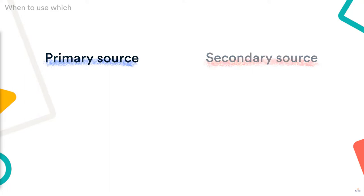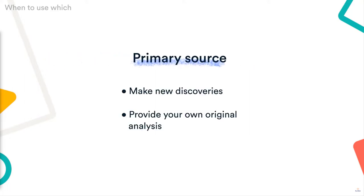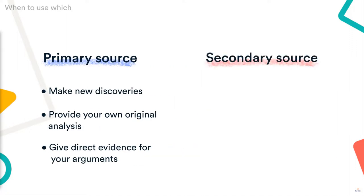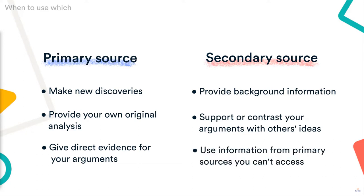Primary sources make your work more original and credible, while secondary sources show how your work relates to existing research. Use primary sources when you want to make new discoveries, provide your own original analysis, or give direct evidence for your arguments. Use secondary sources when you want to provide background information on a topic, support or contrast your arguments with other researchers' ideas, or use information from primary sources that you can't access directly — for example, private letters or physical documents located elsewhere.